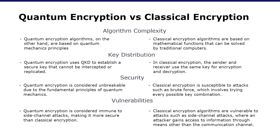Next is security. Classical encryption methods are susceptible to attacks such as brute force, which involves trying every possible key combination until the correct one is found. Quantum encryption, on the other hand, is considered unbreakable due to the fundamental principles of quantum mechanics. Any attempt to intercept or measure qubits would be detected and the key would be discarded, making it completely secure.